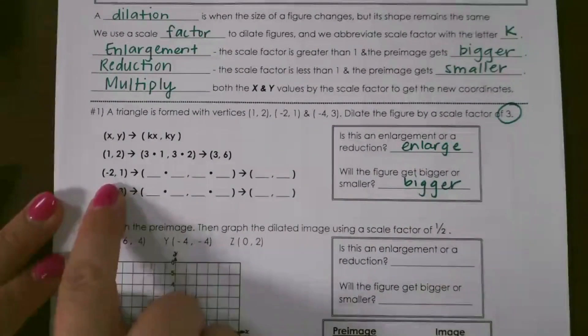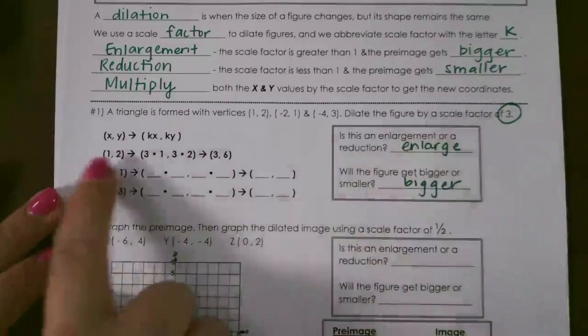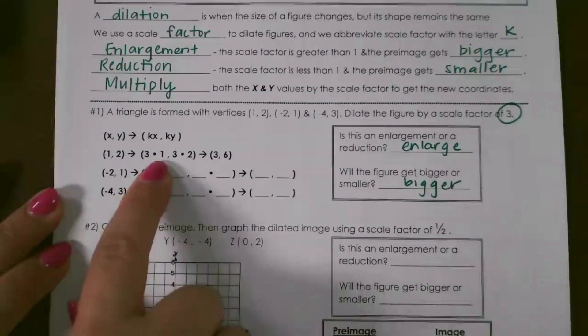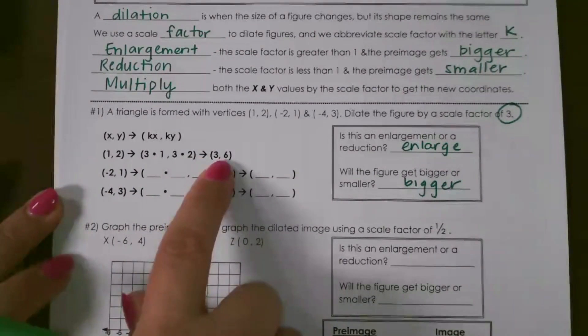So I'm going to take each of my coordinates, each of my ordered pairs, and multiply them by 3. So here on the first one, I had (1, 2). I multiplied the x value by 3 and the y value by 3, and that gave me my new ordered pair of (3, 6).